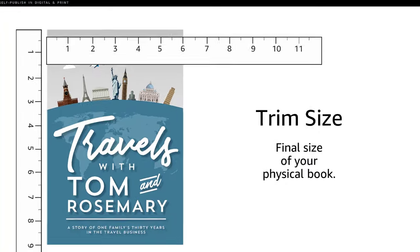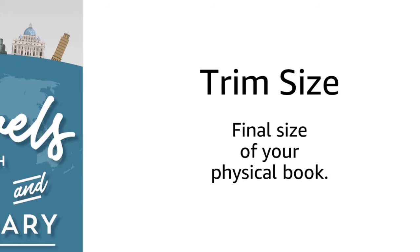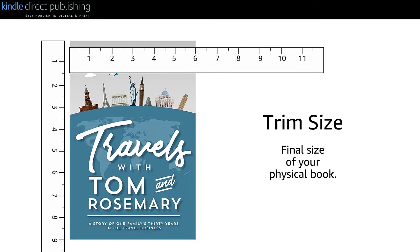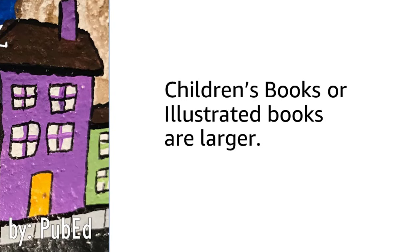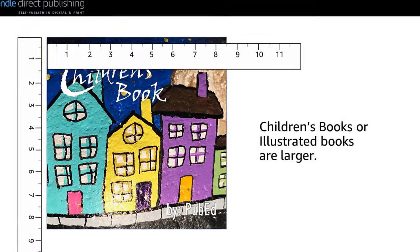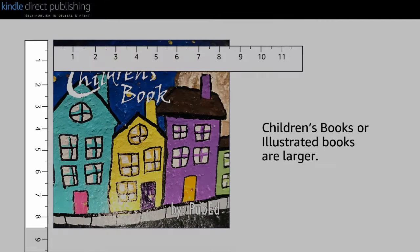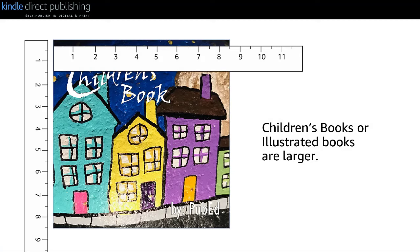Trim size is the industry term for the final size of your physical book after it has been printed and cut down to its desired width and height. The most popular trim size on KDP is 6 by 9 inches, but you can choose your trim size based on the type of book you are creating. Children's books are usually larger than novels, for example, 8.5 by 11 inches or 8.5 by 8.5 inches, and some novels may be smaller, like 5 by 8 inches. Whatever trim size you choose, note that this will determine your page size for both your interior and cover file.